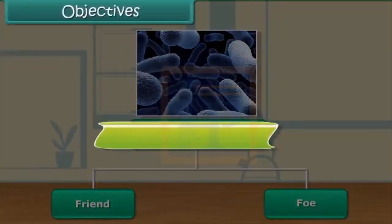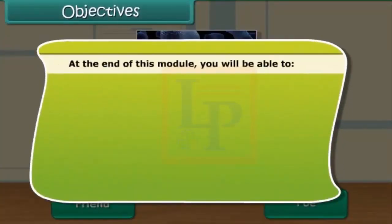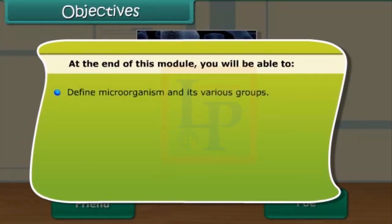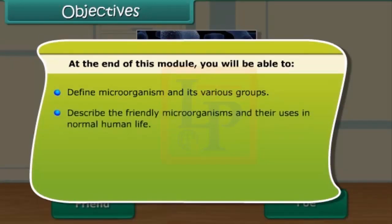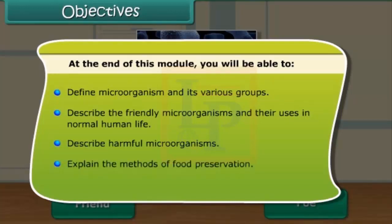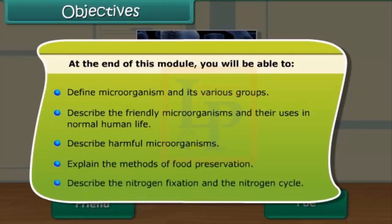Objectives. Friends, at the end of this module, you will be able to define microorganism and its various groups. You will also be able to describe the friendly microorganisms and their uses in normal human life. Besides, you will be able to describe harmful microorganisms and explain the methods of food preservation. In addition, you will also be able to describe the nitrogen fixation and the nitrogen cycle.